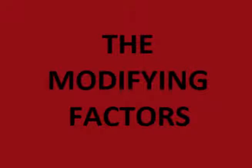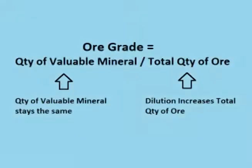These modifying factors are used to determine which part of the resources are currently mineable for a profit and which are not. When converting mineral resources to reserves, the competent person includes dilution and losses into the estimate. Dilution occurs because some of the non-valuable dirt and rock surrounding the reserves must also be mined out, which increases the total tonnage of material being pulled out of the ground.